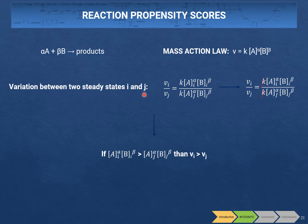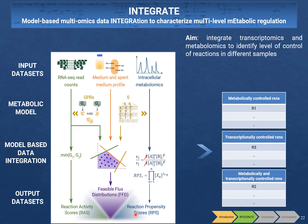We assume the mass action law, which states that the rate of a reaction is proportional to the rate constant and to the product of substrate concentrations, each raised to the power of its stoichiometric coefficient. When comparing two steady states i and j, the flux ratio V_i over V_j equals the ratio of the two mass action law formulations. Assuming the enzyme is the same in both steady states, this simplifies so that the flux ratio equals the ratio of the product of substrate concentrations. Therefore, if the product of substrate concentrations in steady state i is higher than in j, we can conclude that V_i is higher than V_j. By intersecting these three derived datasets, INTEGRATE can discriminate fluxes regulated at the metabolic and/or transcriptional level.